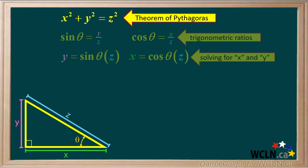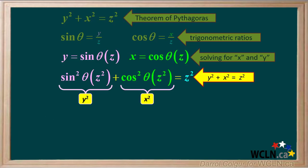Remember, the Theorem of Pythagoras is x squared plus y squared equals z squared. This is of course the same as y squared plus x squared equals z squared. Now we'll rewrite the Pythagorean Theorem using what we have for x and y and squaring them.